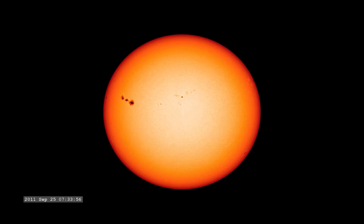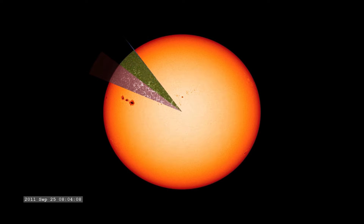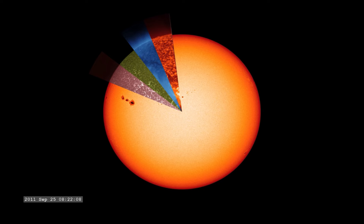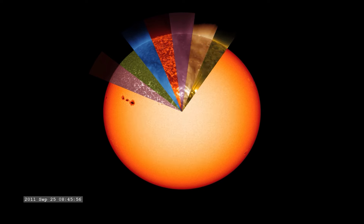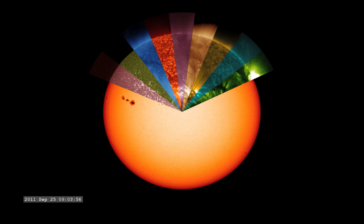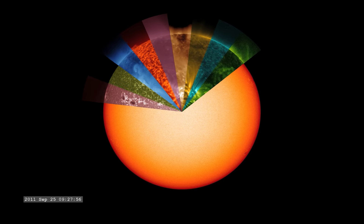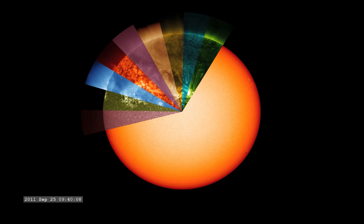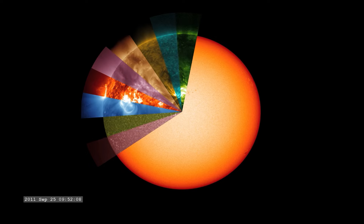SDO has several wavelengths that help you see the sun at different temperatures. It goes all the way from cooler temperatures, shown in light purple on the left, all the way to dark green on the right, which represents hotter temperatures. So you're going all the way from the surface of the sun to the solar corona, which is its atmosphere.